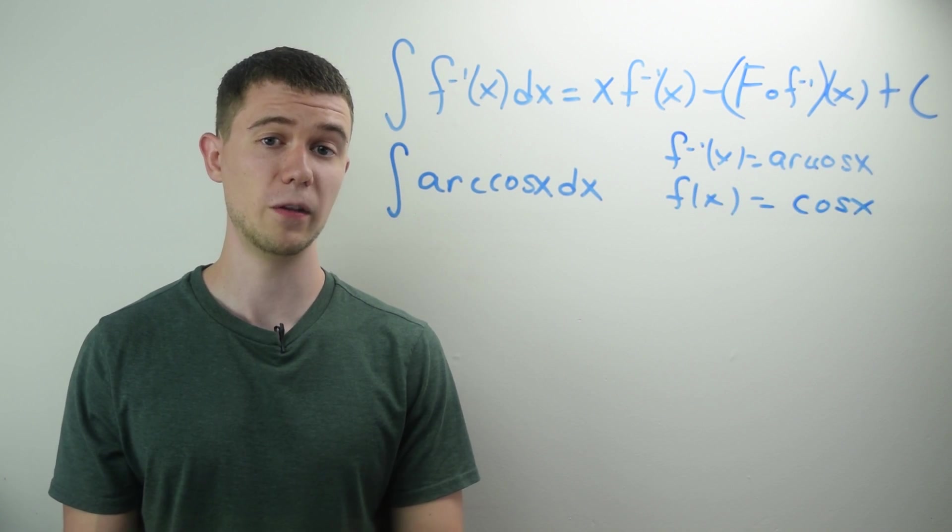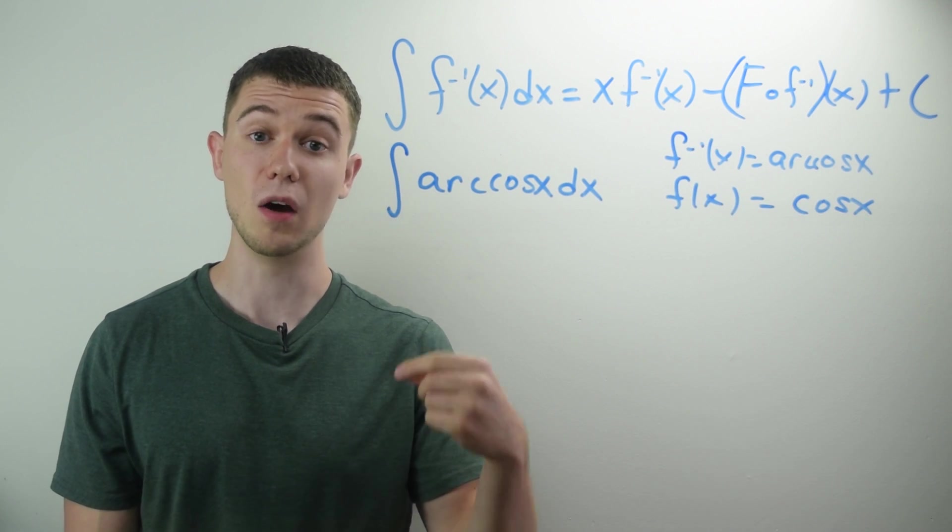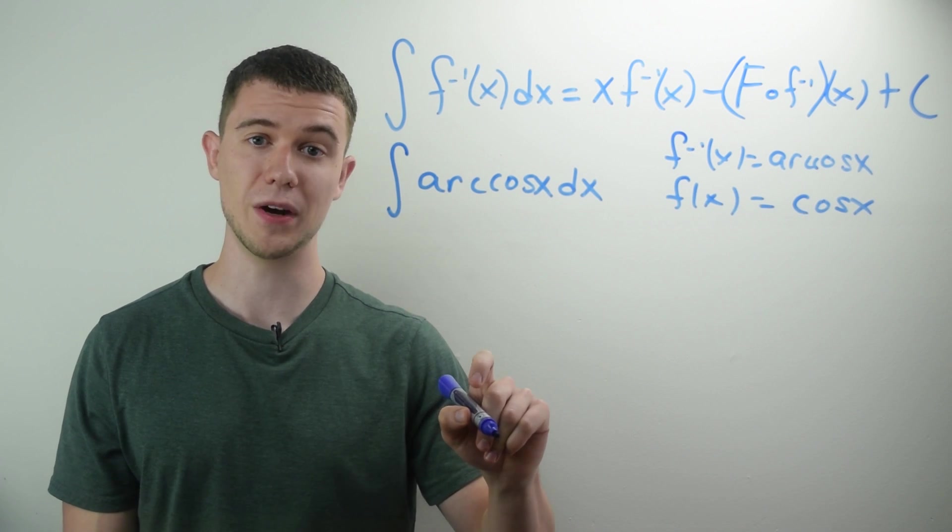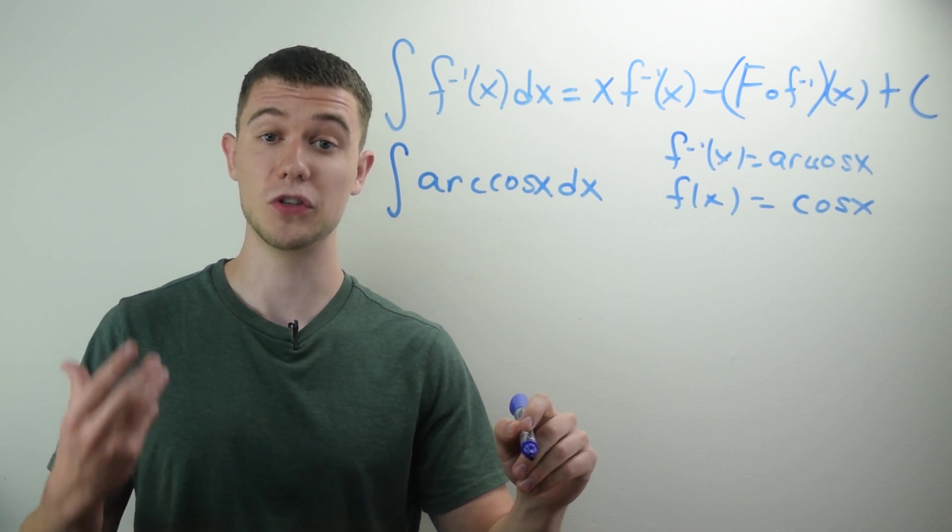Now, in this formula, you'll notice we use a capital F. That's the antiderivative of lowercase f. So we need to know what's the antiderivative of regular cosine.